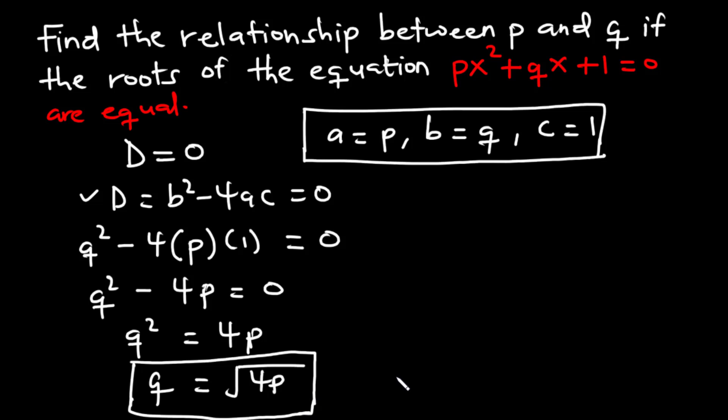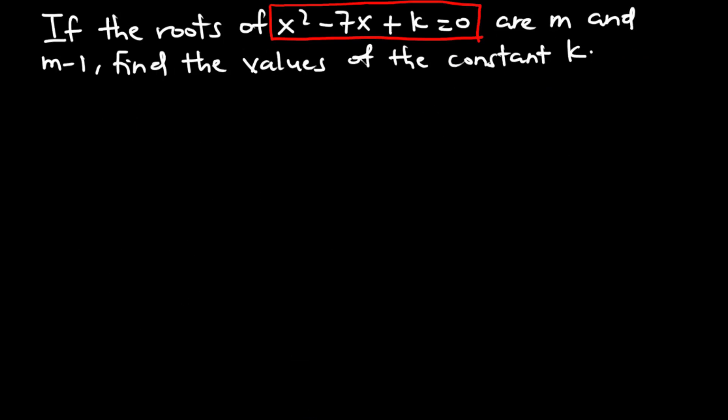That's very simple. Now let's try this question together. If the roots of x squared minus 7x plus K equals 0 are M and M minus 1, find the values of the constant K.